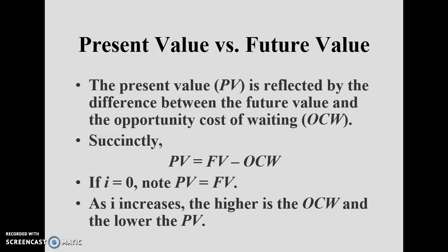Present value is what you have today; future value is what you will receive in the future. The difference between them is the opportunity cost of waiting — the cost involved when moving from present value to future value or vice versa. So: present value = future value minus the opportunity cost of waiting.